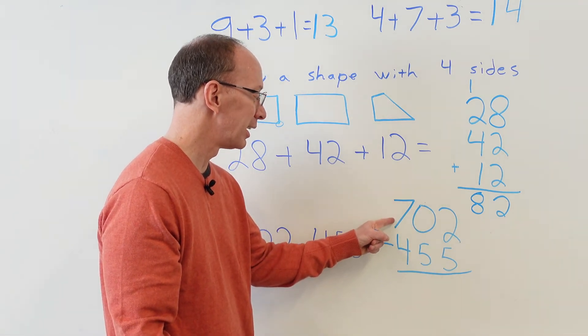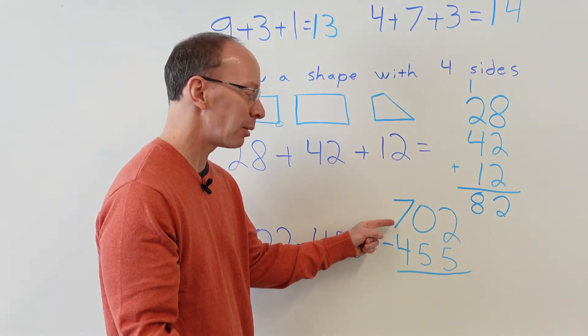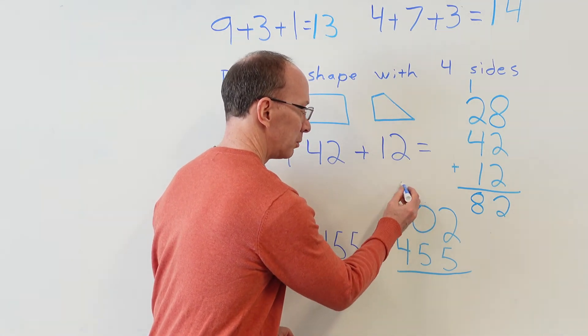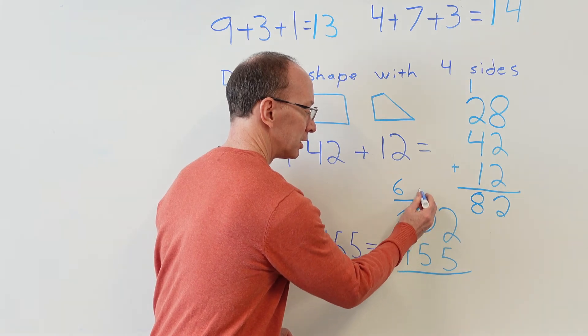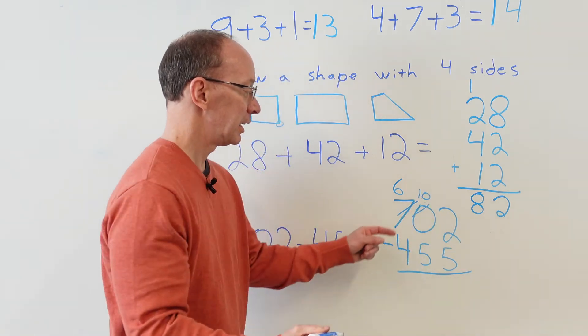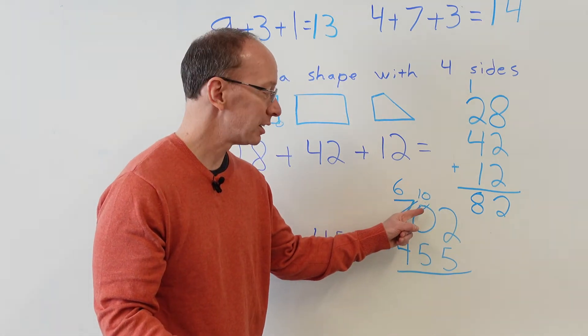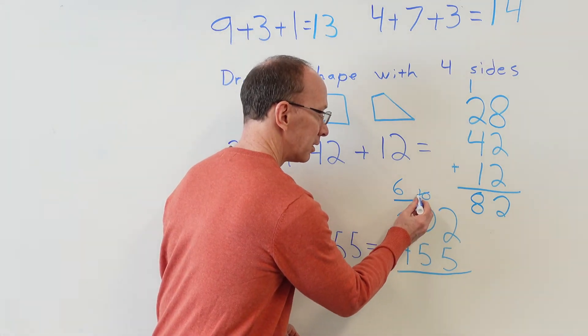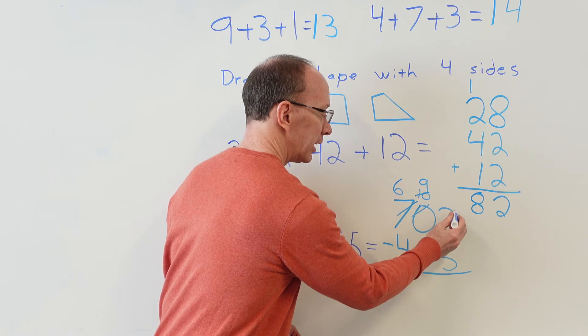So I subtract one from seven which would be six, and now this zero turns into a ten. But remember, I need to give one to the two here, so I need to take one away from the ten, now make that a nine, and now this becomes a twelve.